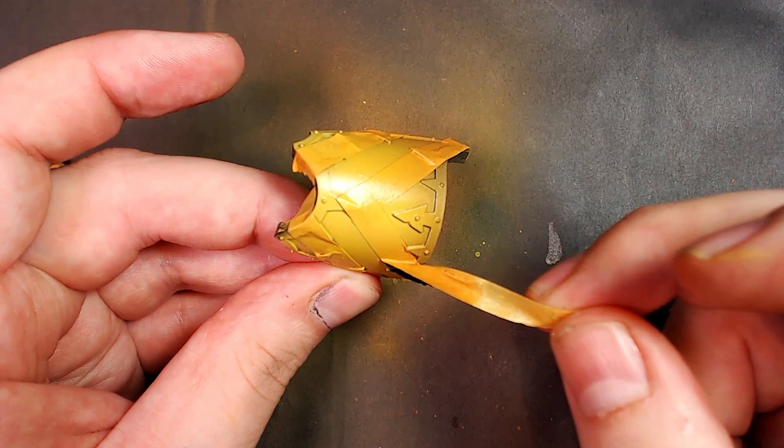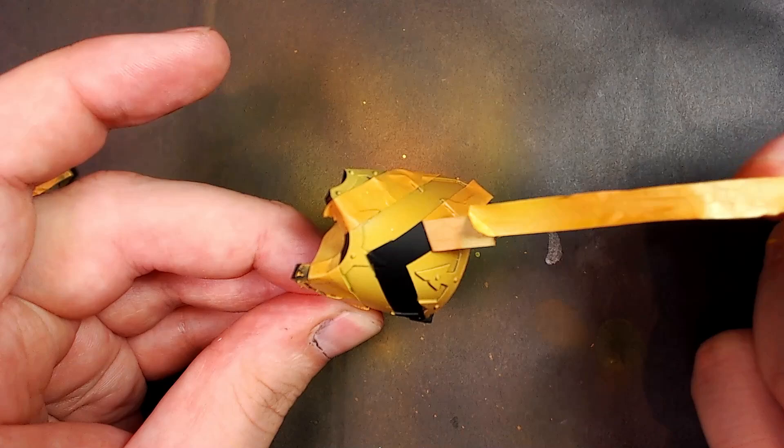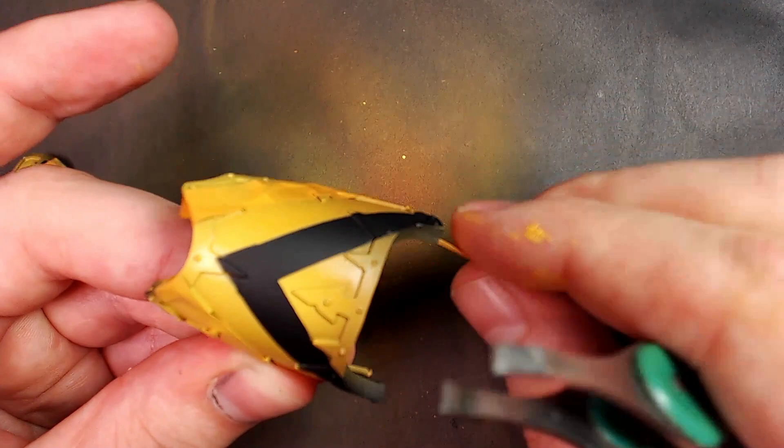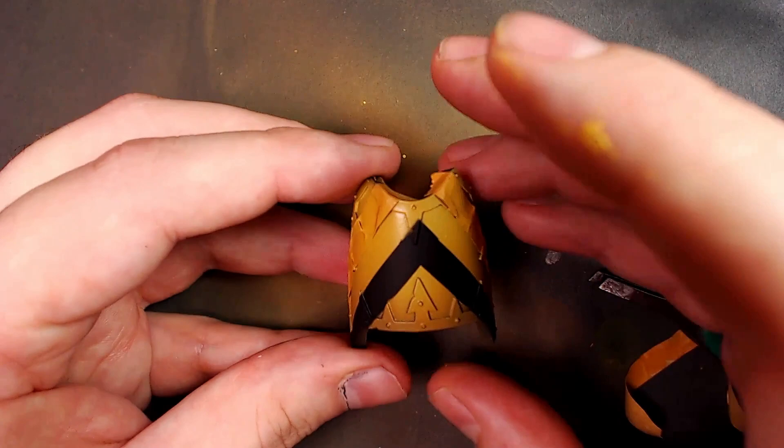We primed this model, then we primed it again, then we let it dry for a while, then we painted a little black on it, then we let it dry, then we varnished it, then we put our tape on it, and now we're slowly peeling it off. And there we go, we're not pulling any of that paint with us. That's perfect.